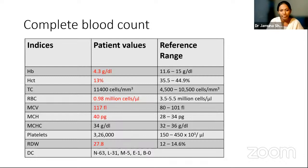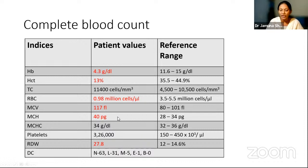Looking at the complete blood count of our 52-year-old lady: hemoglobin is low at 4.3 g/dL, hematocrit is very low, total count is high-normal, and RBC count is very much decreased. The MCV is 117 — remember, MCV more than 100 is called macrocytic anemia. When MCV is more than 110, it definitely points to either B12 or folate deficiency. The MCH is 40 picograms, which is elevated. However, MCHC is normal — in some cases it can even be decreased. Platelets are normal in this scenario. RDW (red cell distribution width) is elevated. All these features point toward macrocytic anemia.